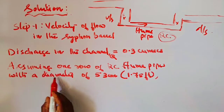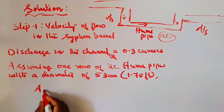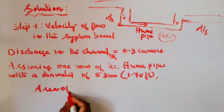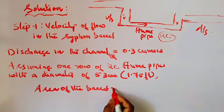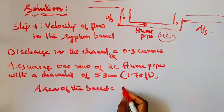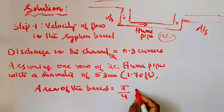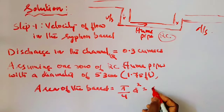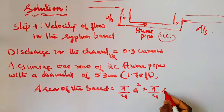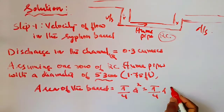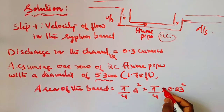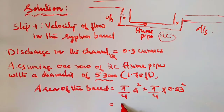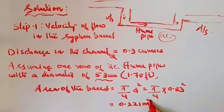We need to find the area of the barrel, which is the pipe cross-section. Since it is circular, Area A = (π/4) × D². With D = 53 cm = 0.53 meters, the calculated area is A = 0.221 square meters.